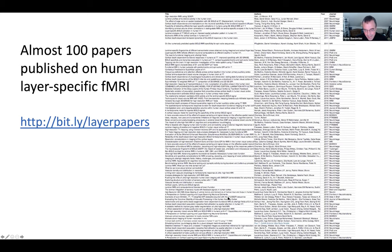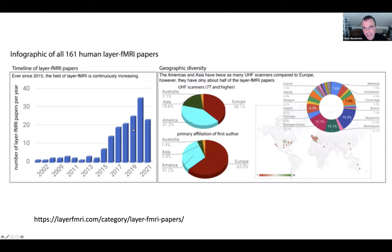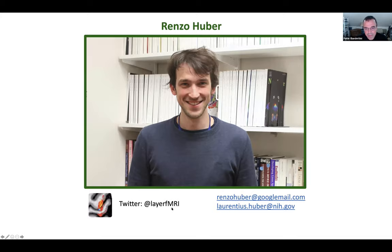The field of layer fMRI has pretty much expanded rapidly, especially from 2016 onward. Renzo keeps track of all the published papers on his website. Most layer fMRI studies are being done at 7 Tesla, with activity mostly in Europe, some in America, some in Asia. Renzo's Twitter feed and email are available for those interested in following the latest developments.